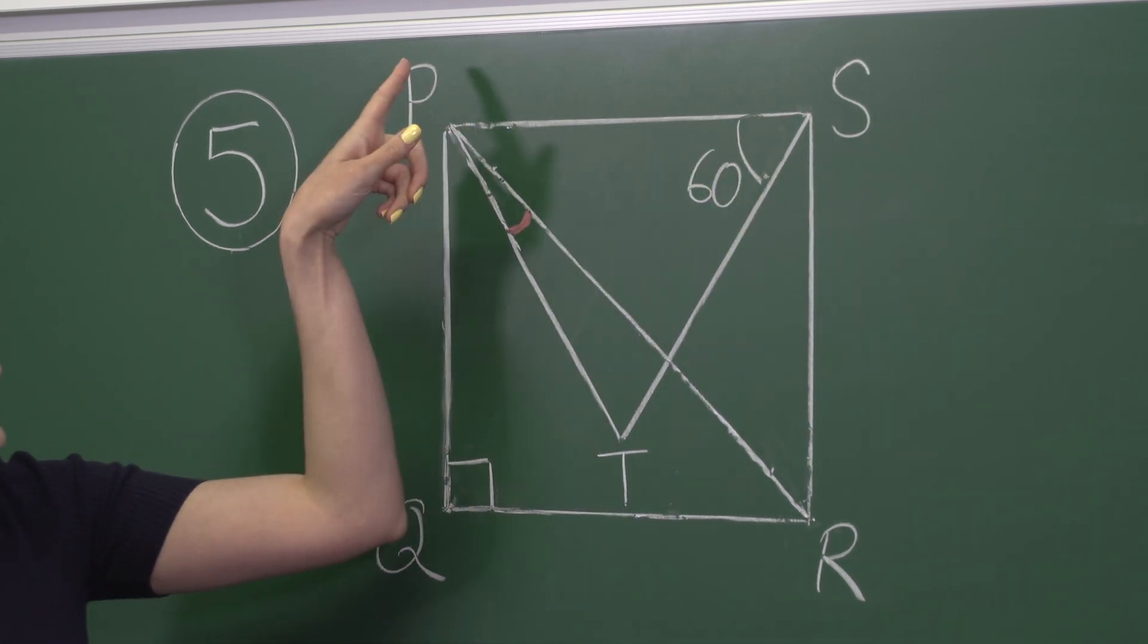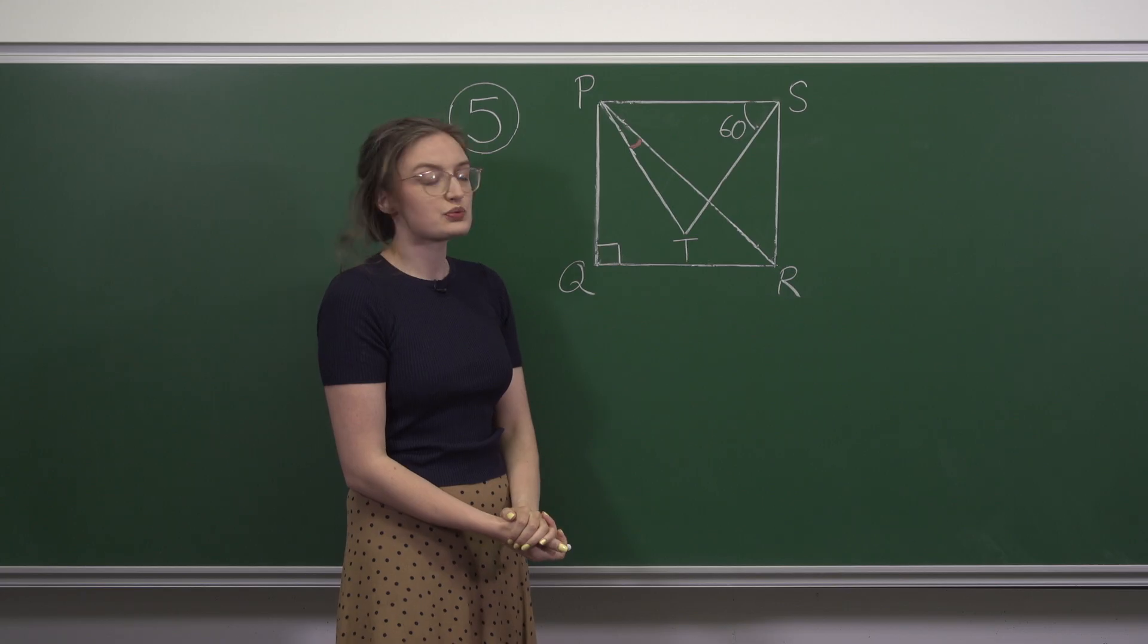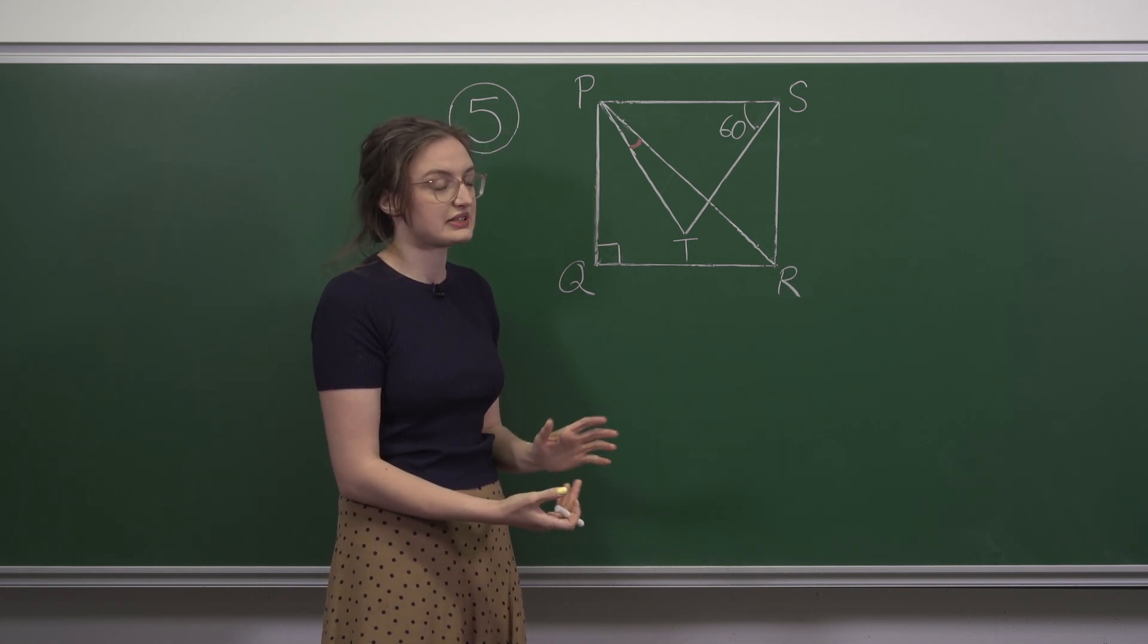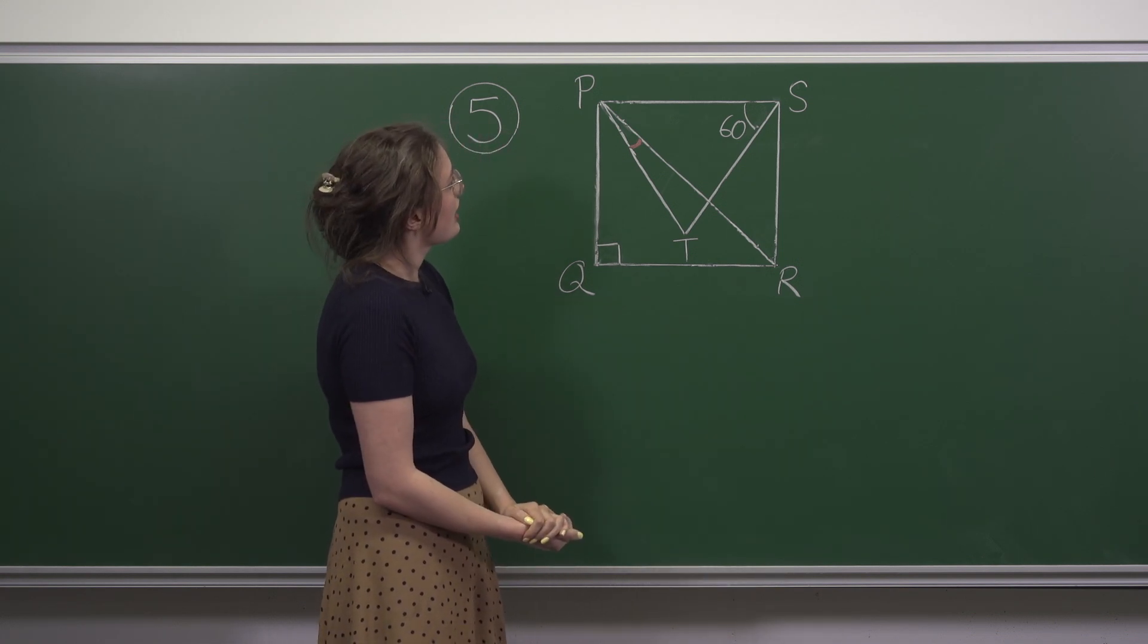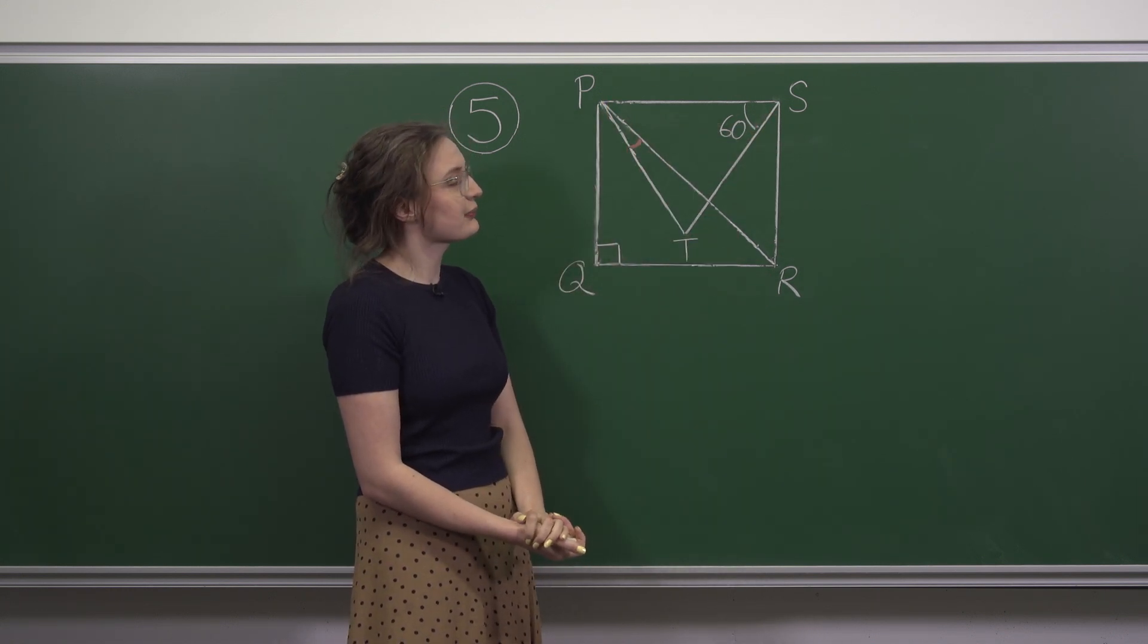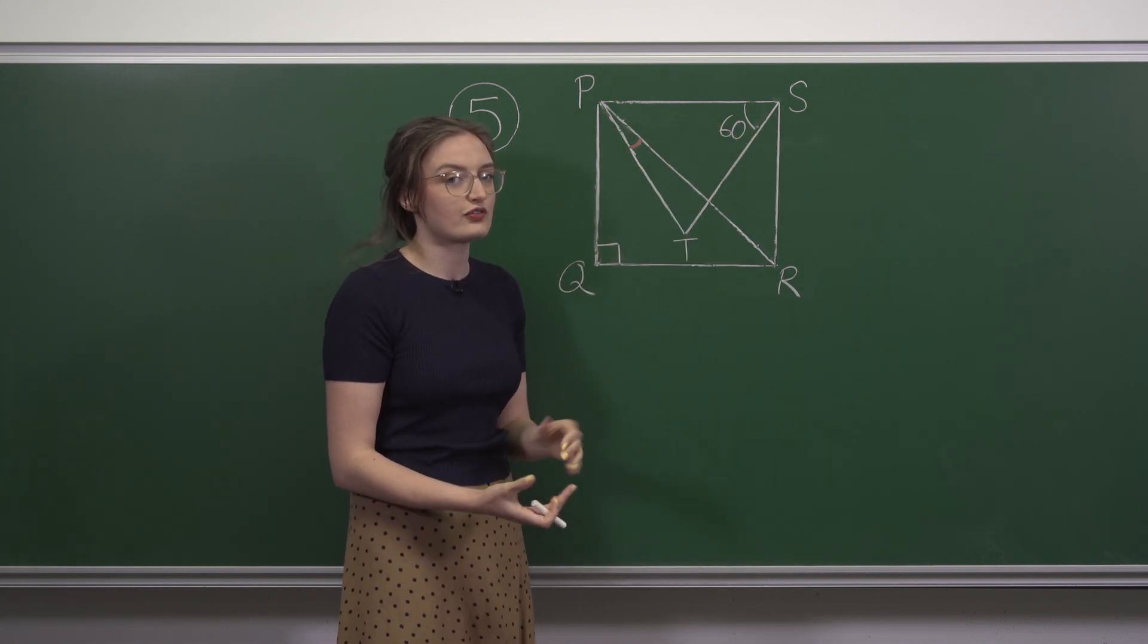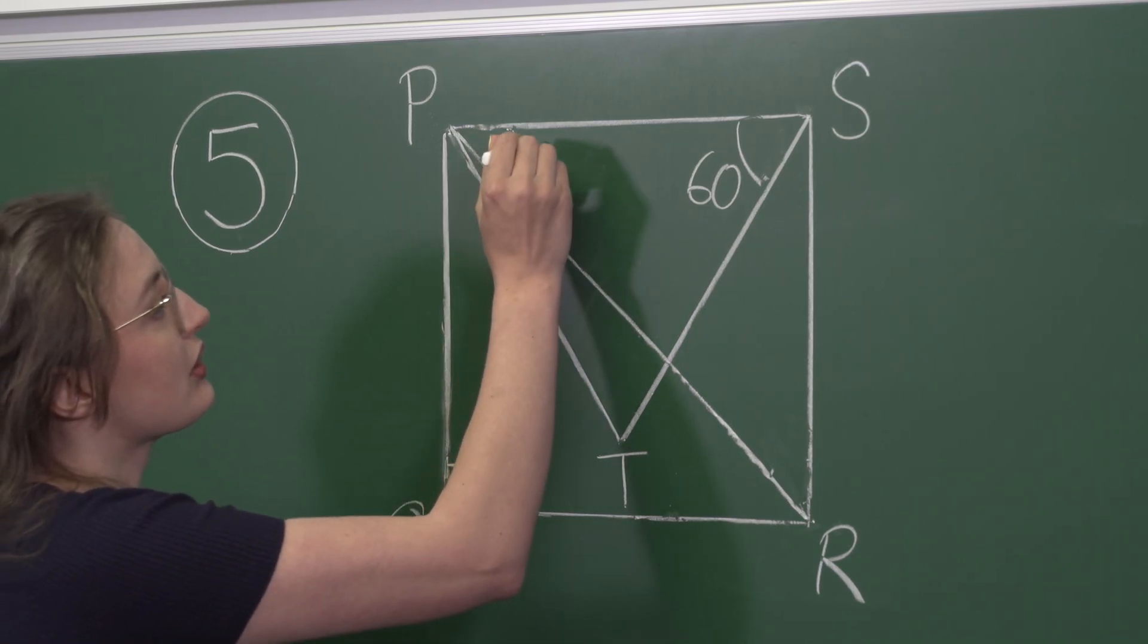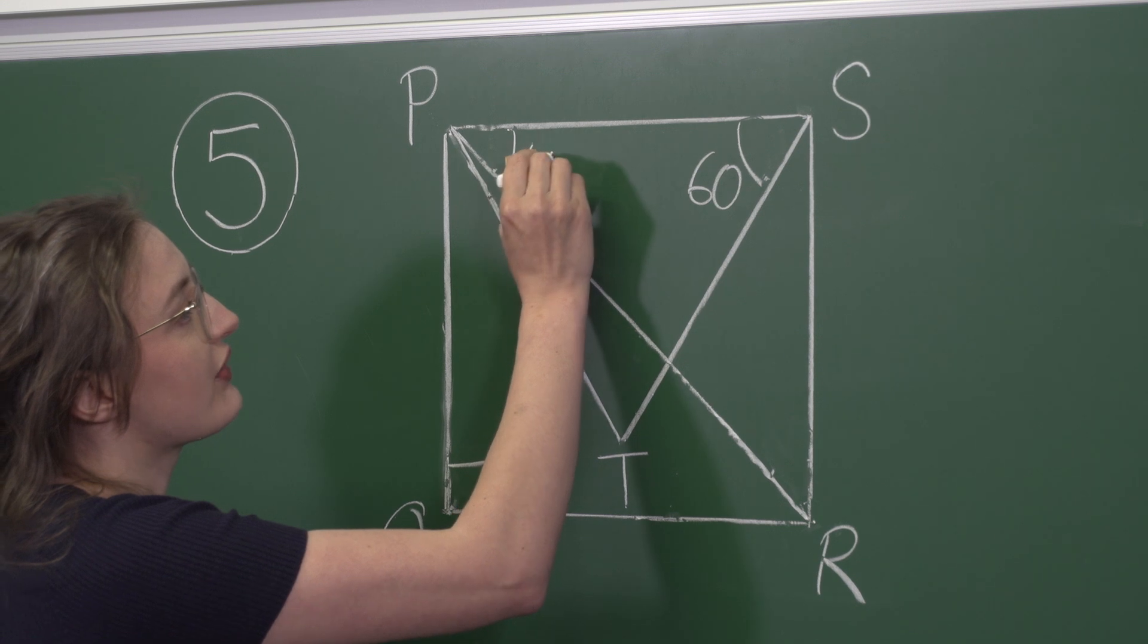The angle SPT is one corner of our equilateral triangle, so it's 60 degrees. The angle SPR, well, that's half of a right angle. We can mark it on here as 45 degrees.